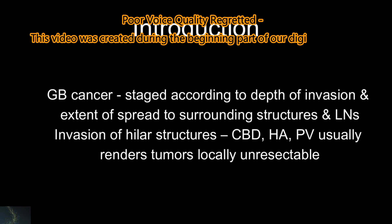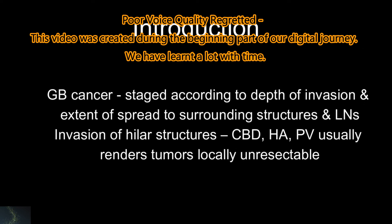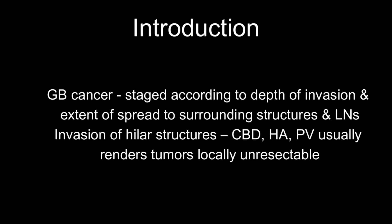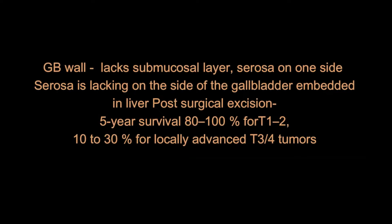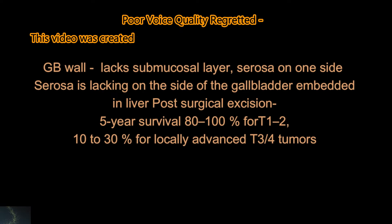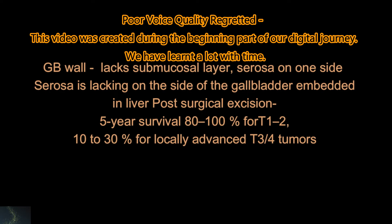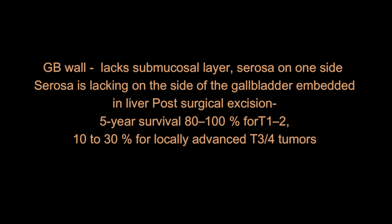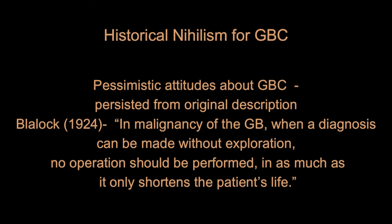Brief introduction on gallbladder cancer staging. Gallbladder is a unique organ which lacks the mucosal layer and that is the reason there is early spread of cancer. The cirrhosis layer is also absent towards the hepatic side. The five-year survival is 80 to 100 percent for T1-T2 tumors and it drops to 10 to 30 percent for locally advanced T3-T4 tumors. So early diagnosis and early treatment is required.